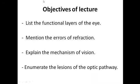Today our lecture will be about the physiology of vision. This lecture will be divided into many parts. At the beginning we'll start with functional anatomy of the eye, external structure and its internal layers. Then we'll go to the process of refraction, discussing errors of refraction and their treatment, explain the mechanism of vision, cones and rods and their role. At last we'll discuss the pathophysiology of lesions of the eye and its optic nerve.